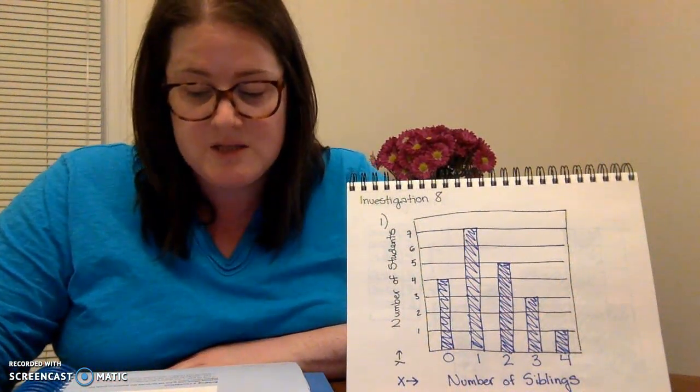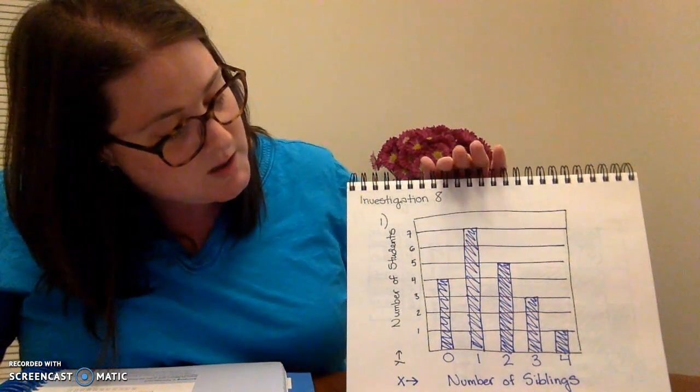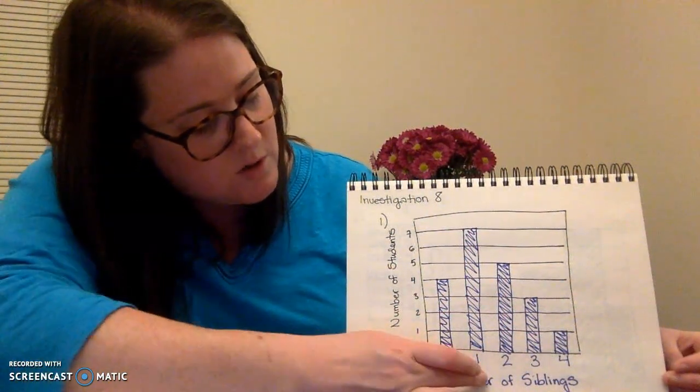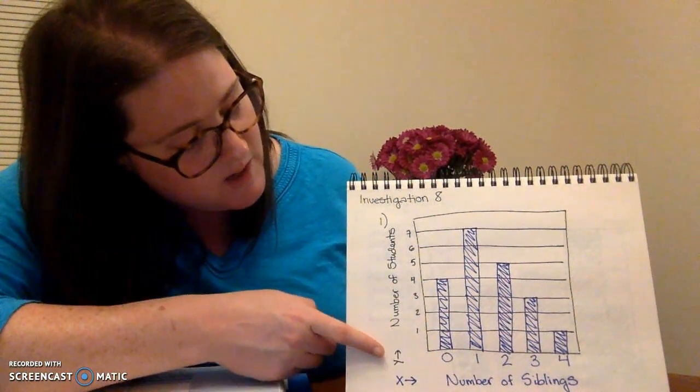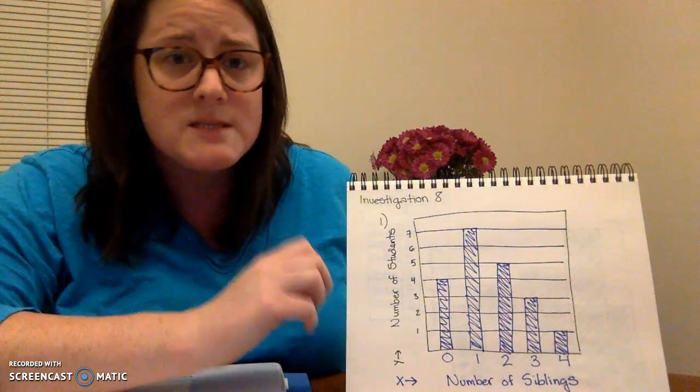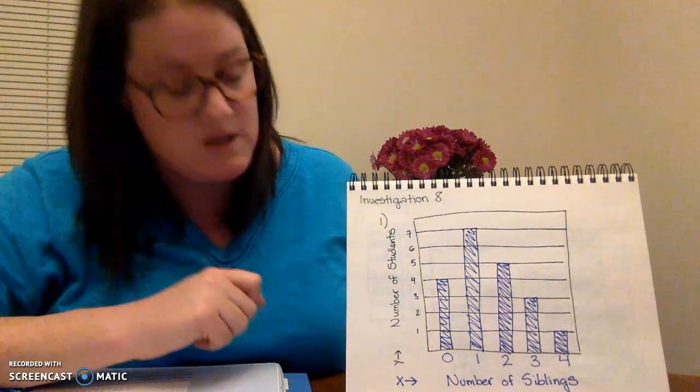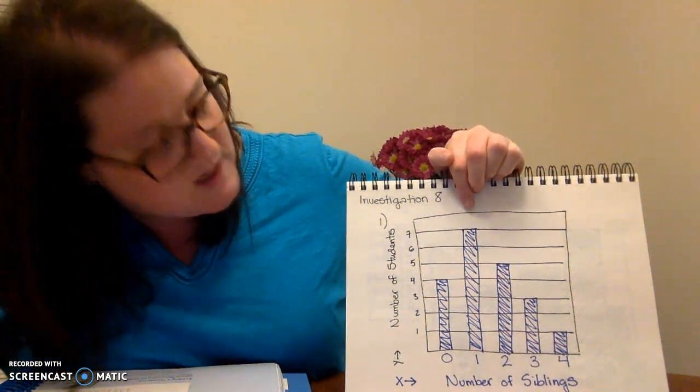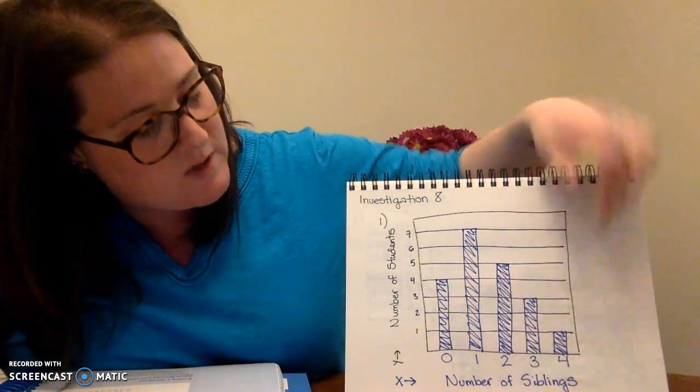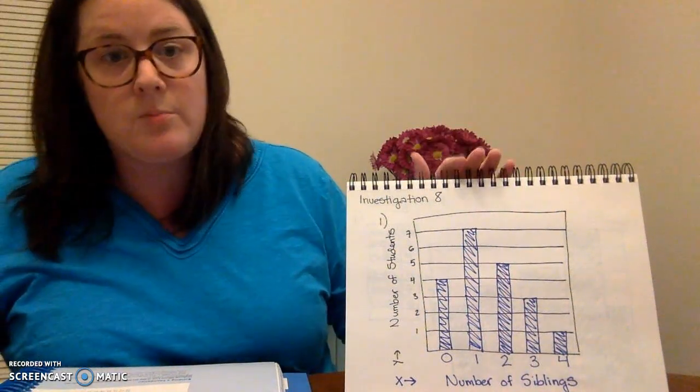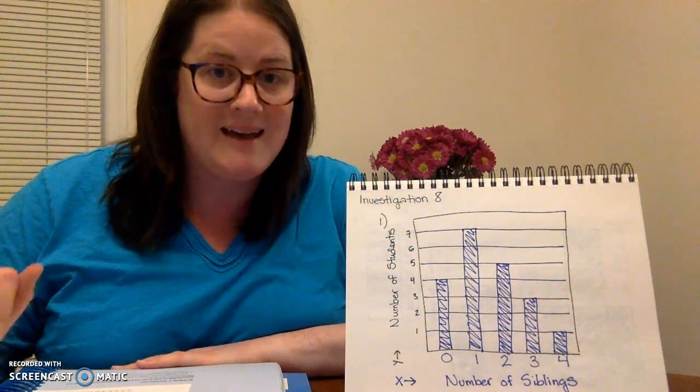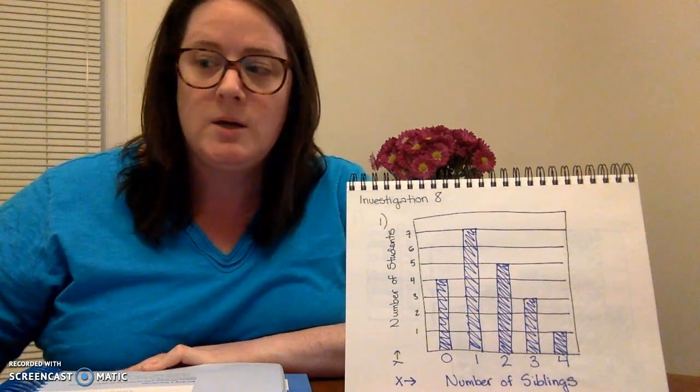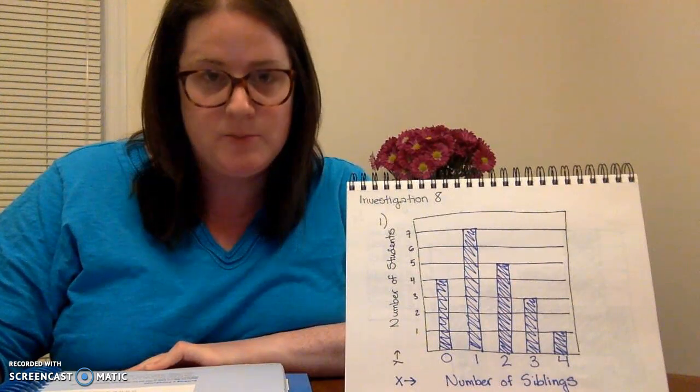We're going to copy and complete this bar graph to display the data. So that is what I have done here. Along my x-axis down here, I have number of siblings: 0, 1, 2, 3, and 4. And then along my y-axis, I have number of students, meaning the frequency at which those number of siblings were achieved. So according to my frequency table in my book, 4 students have no siblings, 7 have 1 sibling, 5 have 2 siblings, 3 have 3, and 4 have 4. So this is what my bar graph should look like for that information. You can pause here and make your own graph that looks exactly like this.